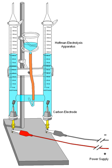1785: Martinus van Marum's electrostatic generator was used to reduce tin, zinc, and antimony from their salts using electrolysis. 1800: William Nicholson and Anthony Carlisle decomposed water into hydrogen and oxygen.